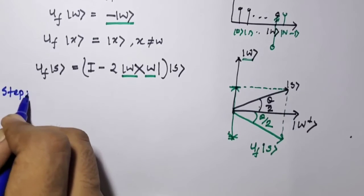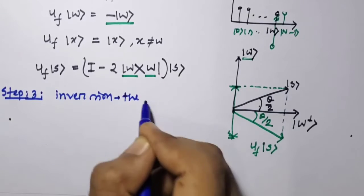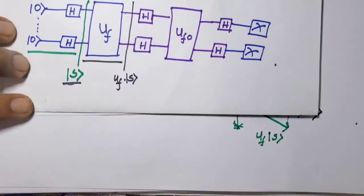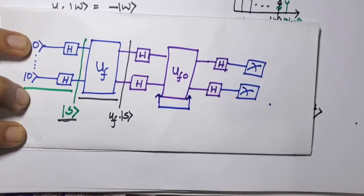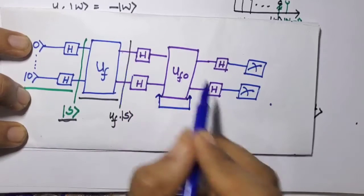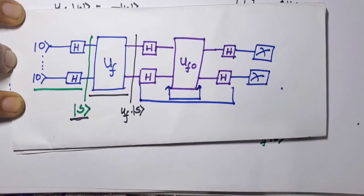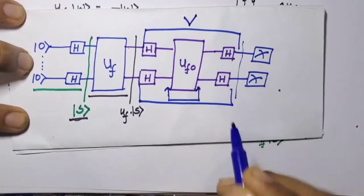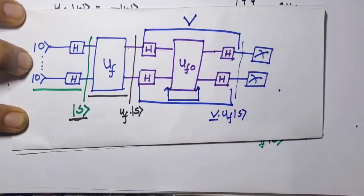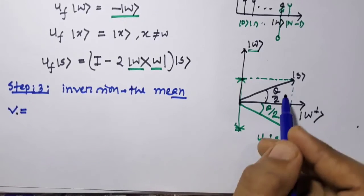The next step is step 3, which is inversion about the mean. Here we see the circuit — this is another oracle. This oracle together with these two Hadamard gates performs an inversion operation. This whole thing is denoted as V and called the diffuser. After that, we get the state V UF S. V is mainly the projection of UF S onto S — it is like 2 times the projection onto S minus the identity matrix.